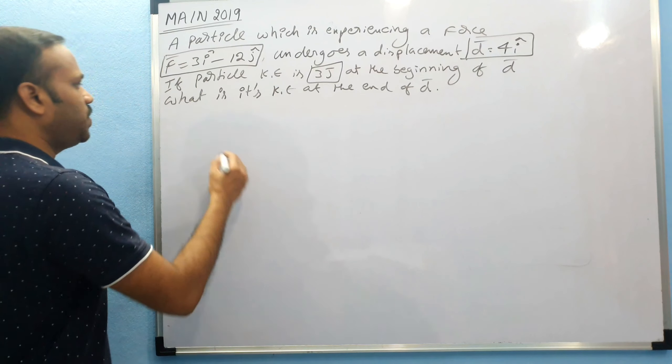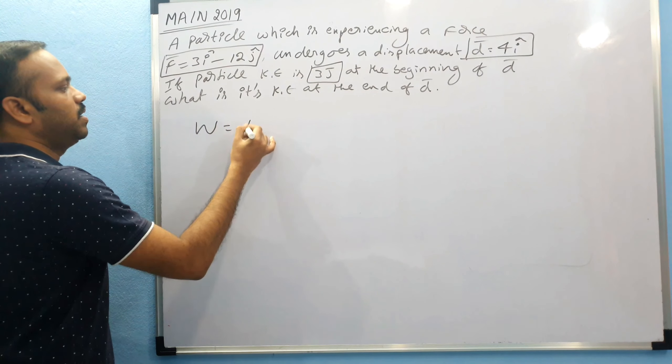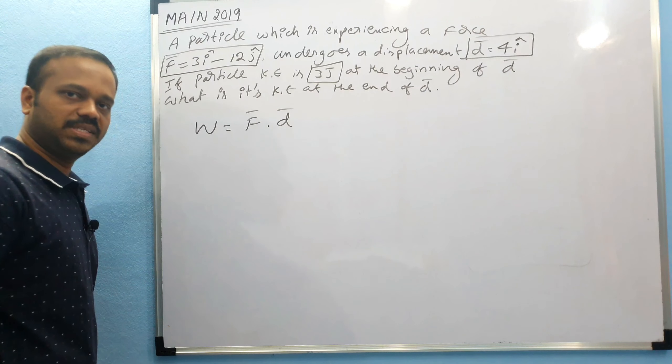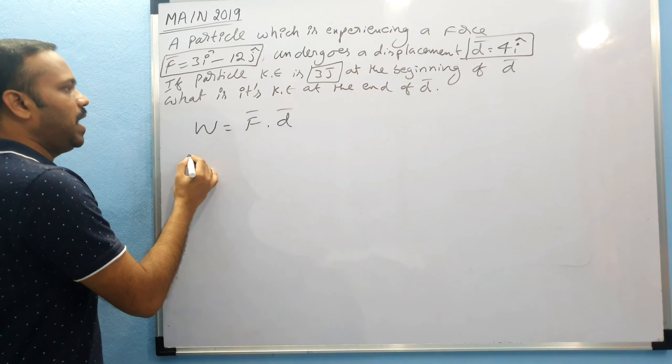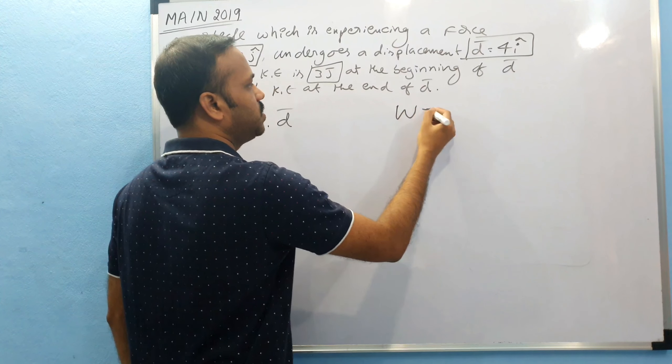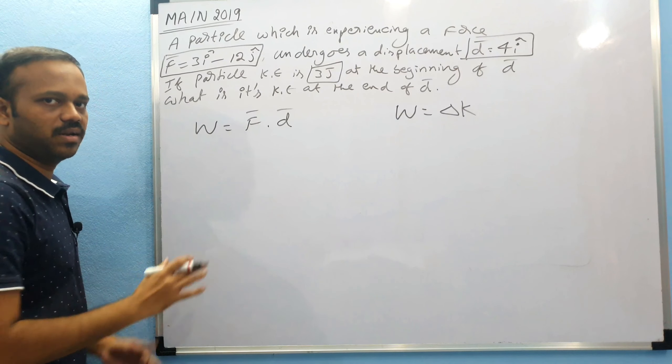When you have force and displacement, immediately you have a formula: F·d is nothing but work done. And from work energy theorem, W = ΔK. By using these two formulas we can calculate what is the kinetic energy.